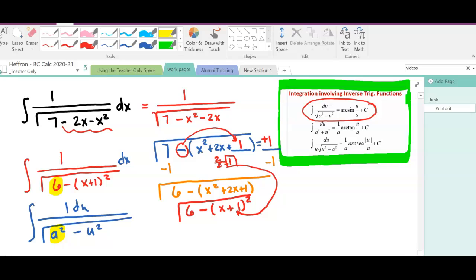So really that means 6 equals a squared, or a equals the square root of 6. Similarly, if u squared equals x plus 1 quantity squared, then u is exactly x plus 1. And now we plug everything into our formula.